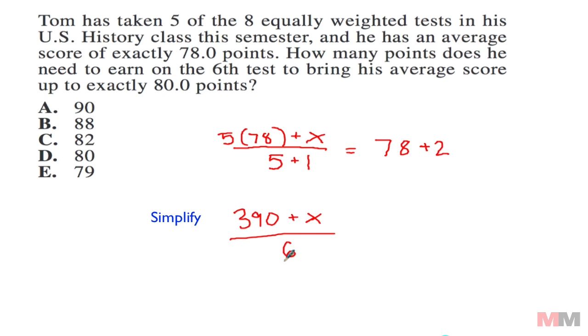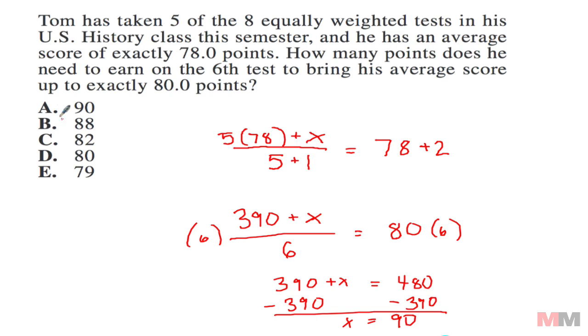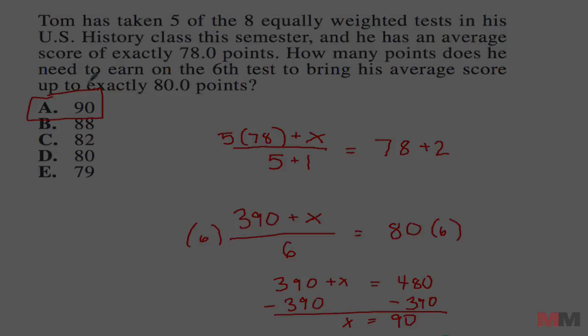Five plus one is six tests, and 78 plus two is 80 points, what he's trying to get. So from here, to solve for x, just multiply both sides by 6. We get 480 equals 390 plus x, and then subtract 390 from both sides, and we get our answer: x equals 90 on his sixth test.